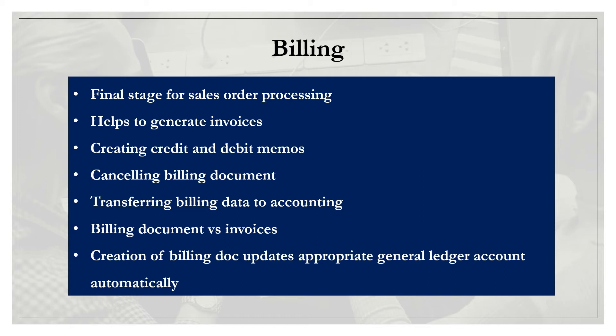So all of your information from the billing document — you're actually getting that data from your sales order and the delivery document during the sales and distribution process. And all of these items or the data that you have on there will eventually go to the accounting department and allow them to be able to create the invoice that gets sent out to the customers.